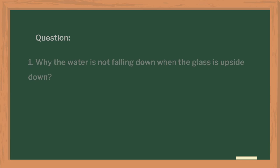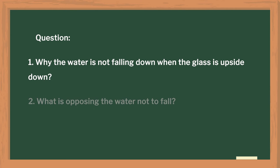After this demonstration, students were curious to know why the water is not falling down even if the glass is upside down. With the help of this activity, they understood the concept of centrifugal force clearly. In discussion with students, you can ask questions like: why is the water not falling down even if the glass is upside down? What is opposing the water from falling? After explaining the centrifugal force, students were able to understand it clearly.